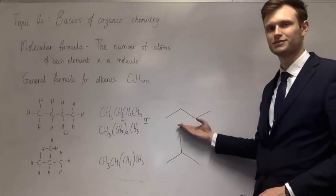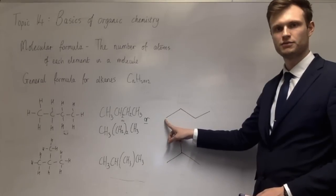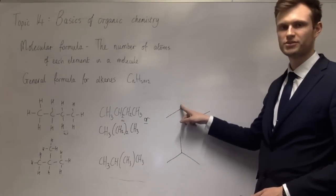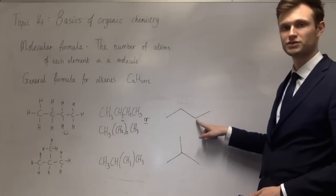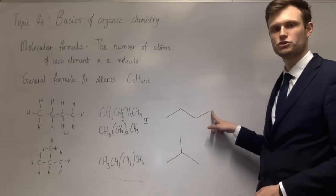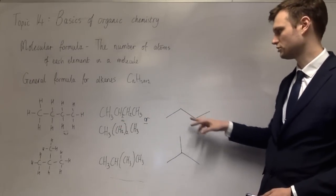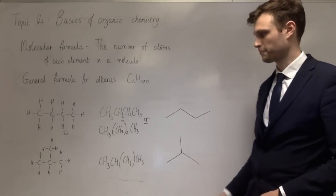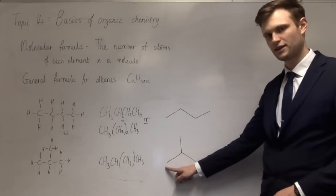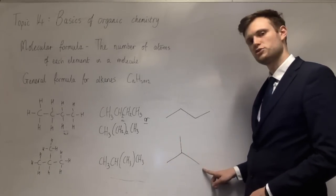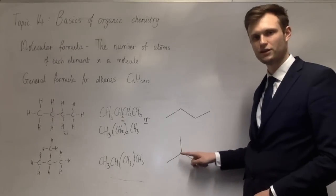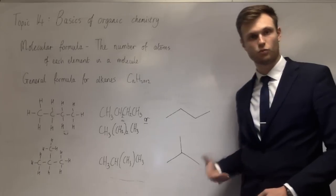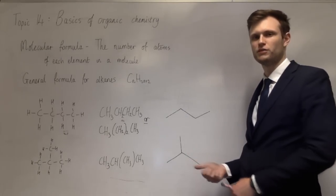Butane will be drawn like this. This end represents the end of the chain. So this is a CH3. This corner represents a CH2. This corner also represents a CH2. And then this end is a CH3. So it's exactly the same, CH3, CH2, CH2, CH3, but it only takes two seconds to draw. This one would be methylpropane. That's a CH3, that's a CH3, that's a CH3. And this, the meeting of three lines, is a CH. Because that carbon is making three bonds to carbons. They've got one left over for an H.